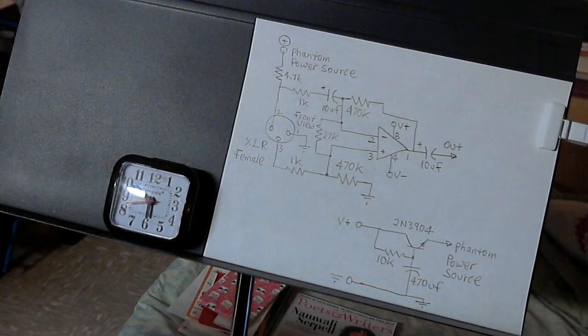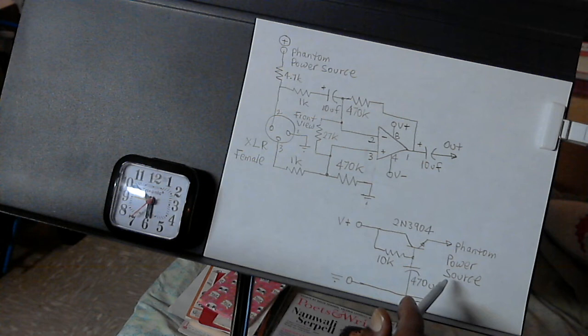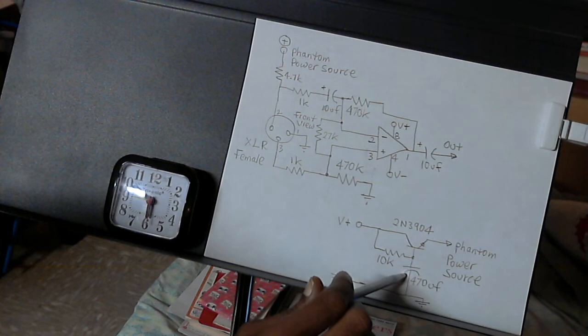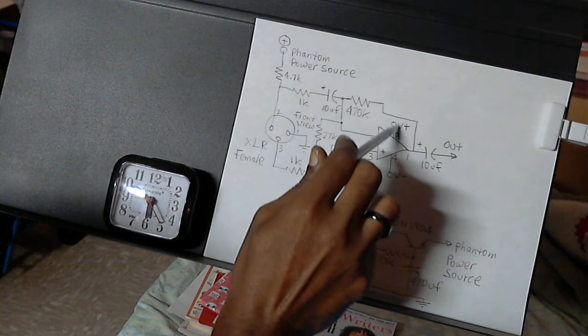This is the power source for the phantom power source, which could be around 12 volts DC. This 470 microfarads capacitor filters out the ripple that's going in here, or the V plus, the same connection, V plus number 8, pin 8, and V plus is the same.